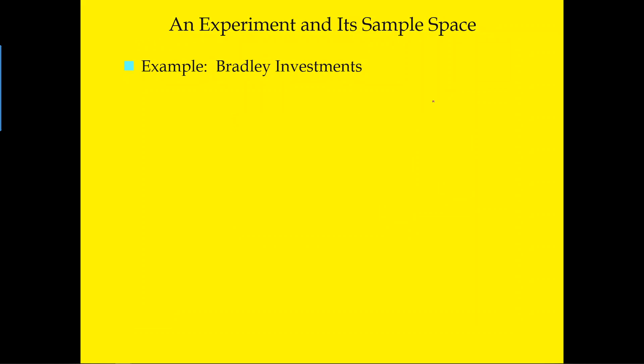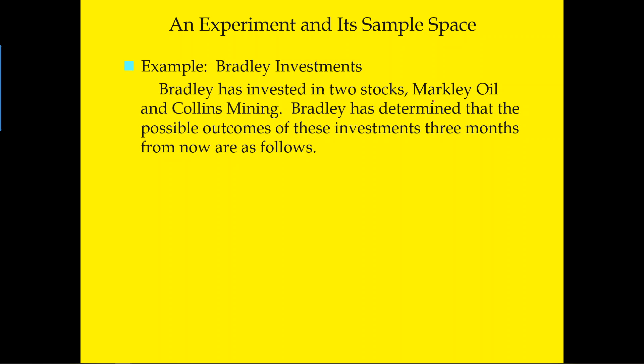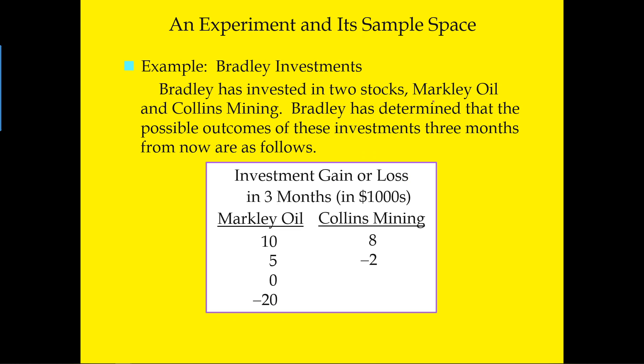Now let's look at a business case. Throughout this chapter we're going to look at the Bradley investment and its investment strategy. Bradley has invested in two stocks: Markell Oil and Coin Mining. We'll use this example to learn different kinds of probabilities. Bradley has determined the possible outcomes of this investment three months from now, and we can see different outcomes from each stock.